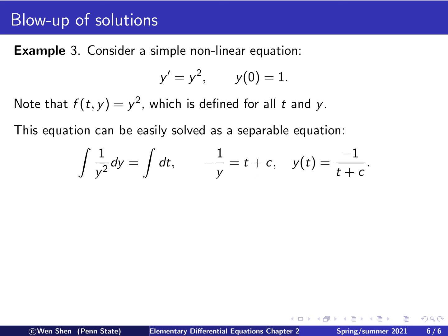And then I can write this further in explicit form by taking the inverse of both sides and multiply by negative 1, and then I found that y(t) is negative 1 over t plus c.